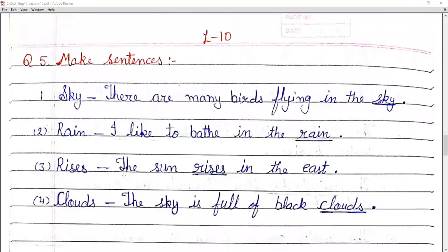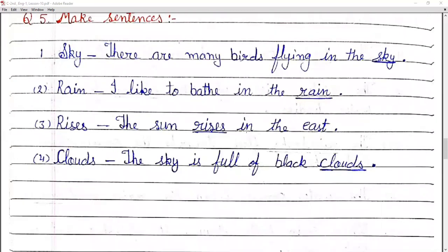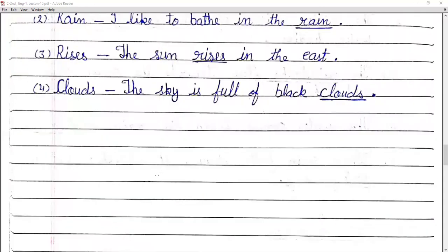Question number five: make sentences. Number one, sky: There are many birds flying in the sky. Number two, rain: I like to bath in the rain. Number three, rises: The sun rises in the east. Number four, clouds: The sky is full of black clouds.